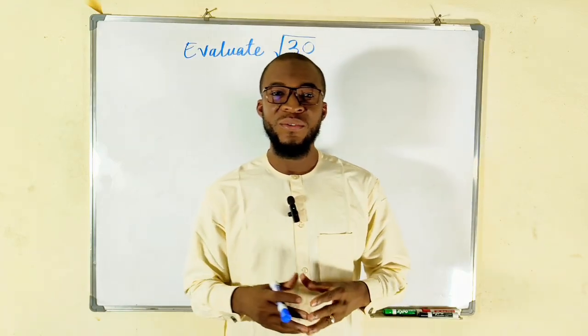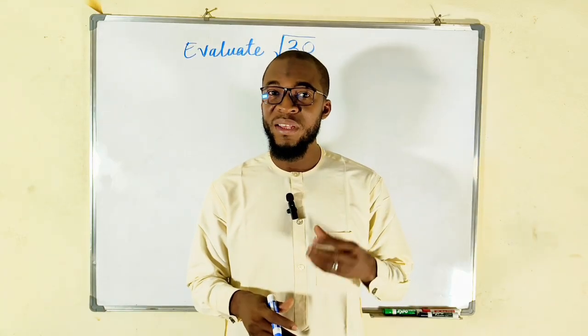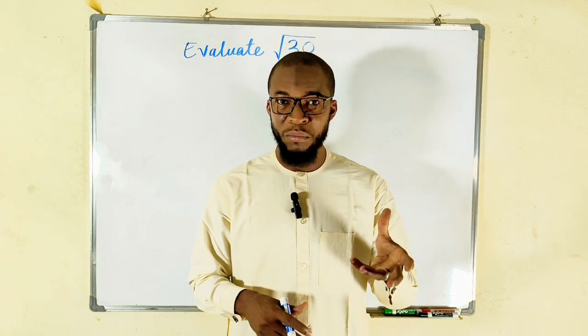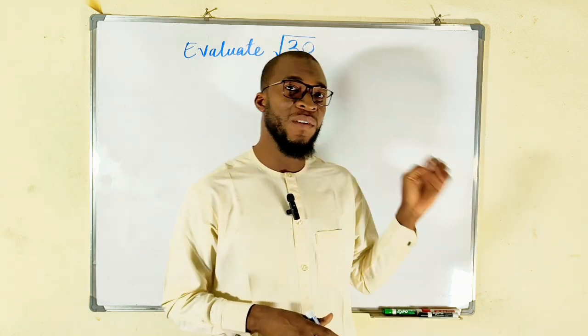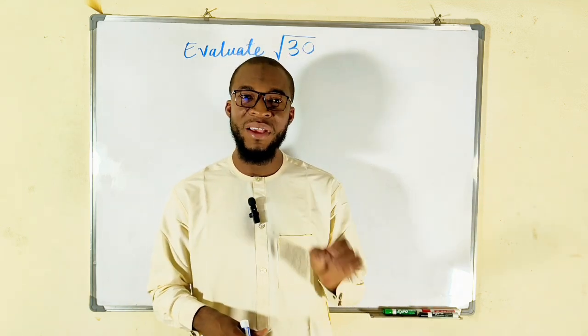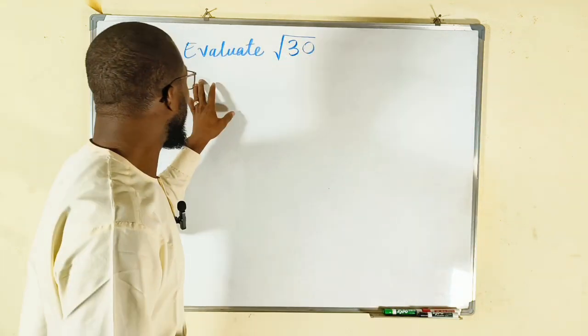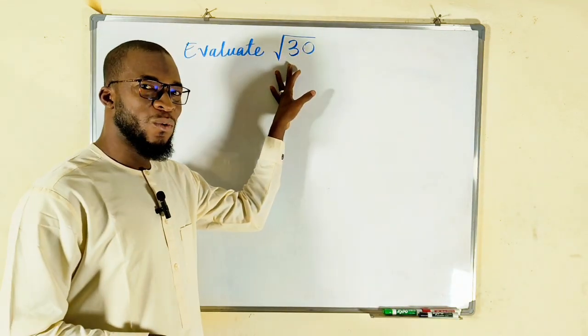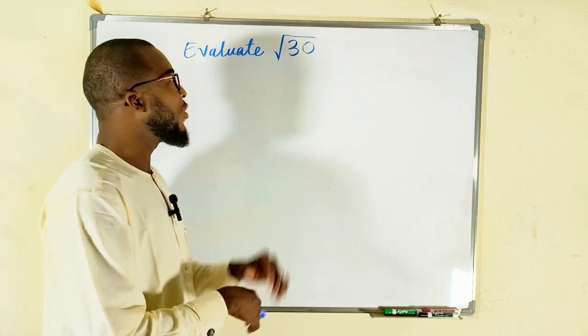Hello, good day viewers. In this tutorial, we are going to learn how to find the square root of non-perfect square numbers, applying the idea of calculus known as linearization. So today, we're going to evaluate the square root of 30, which we all know is a non-perfect square number.